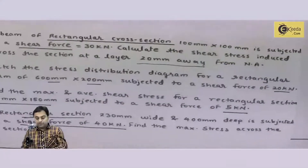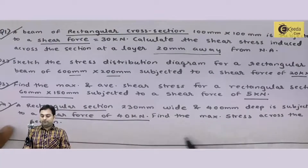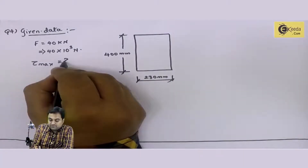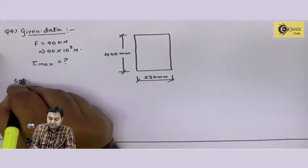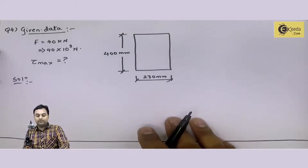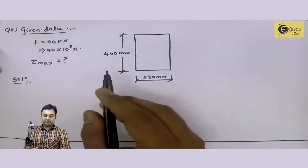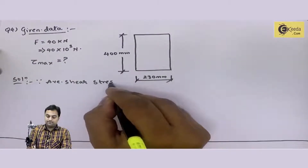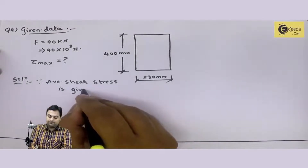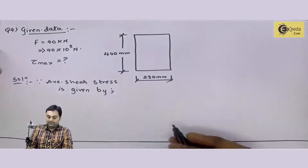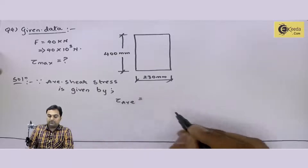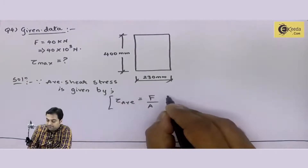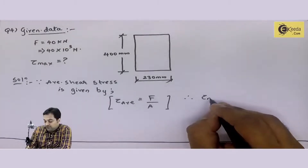Find the maximum stress across the section — we have to calculate the maximum stress. So I'll write the solution. As I have told you before, when we calculate maximum stress, we first need the average stress. So the first step: since average shear stress is given by tau average.